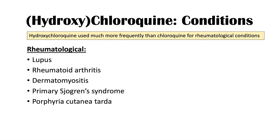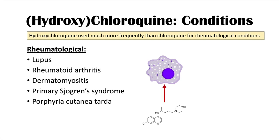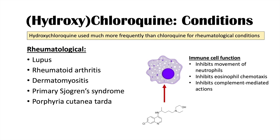How does hydroxychloroquine treat these conditions? It can alter immune cell function — specifically, it inhibits movement of neutrophils, inhibits eosinophil chemotaxis, and inhibits complement-mediated actions. Through its ability to alter these immune cell functions, hydroxychloroquine has immunomodulatory effects and can help treat the perturbations that occur in autoimmune conditions like those mentioned.